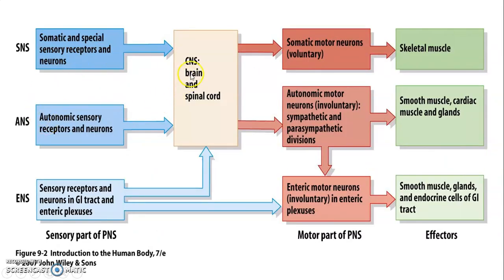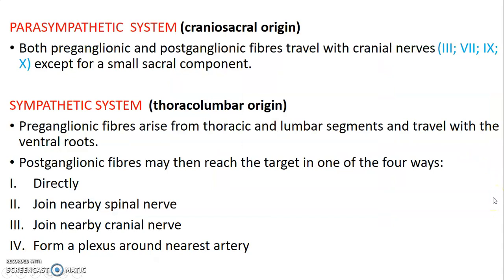The peripheral nervous system can be divided into somatic and autonomic. The somatic portion goes to skeletal muscle, while the autonomic portion innervates smooth muscles, cardiac muscles, and glands. The enteric component innervates smooth muscles, glands, and endocrine cells within the GI tract.